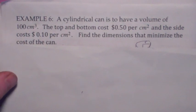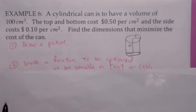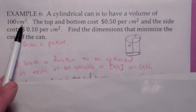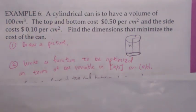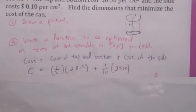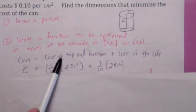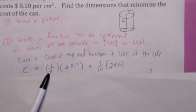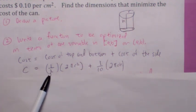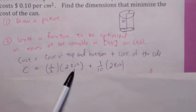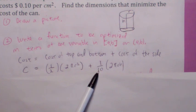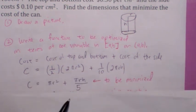Here we want to minimize the cost of a can. It's a closed can with volume fixed at 100 cubic centimeters. The top and bottom cost 50 cents per square centimeter, and the side costs 10 cents per square centimeter. The cost function: the cost of the top and bottom equals 2πr² times one half dollar, and the cost of the side is 2πrh times one tenth. When you simplify, you get the function we're trying to minimize.